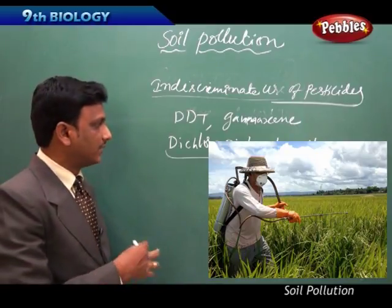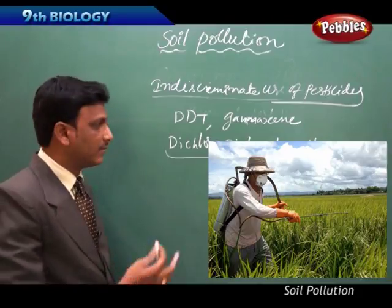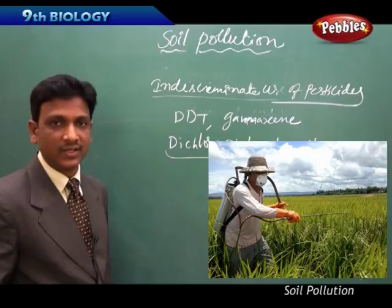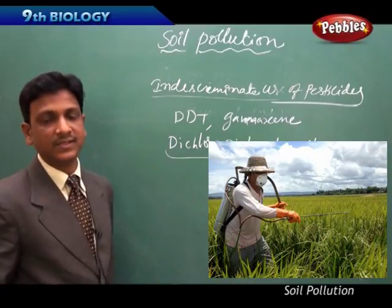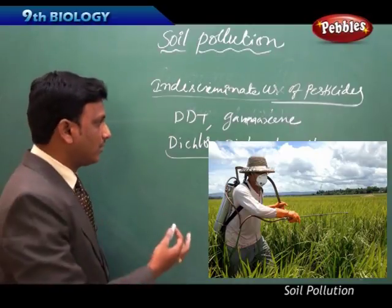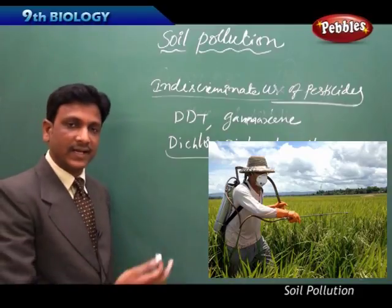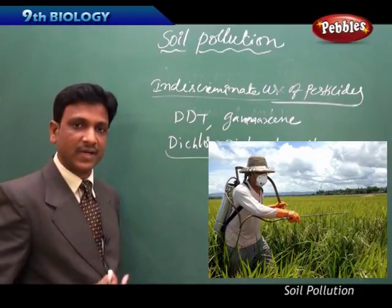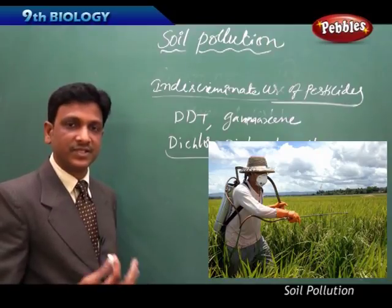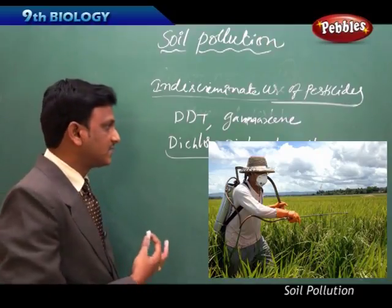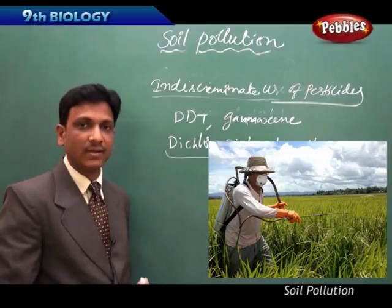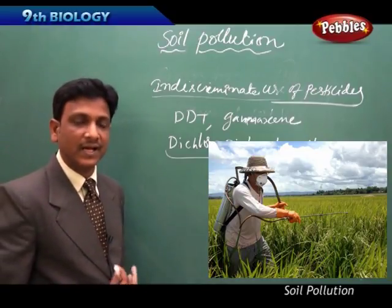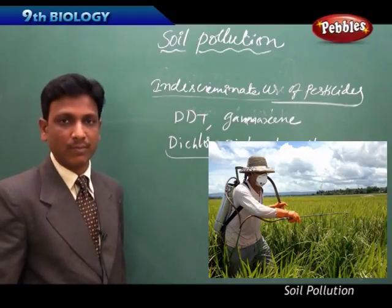Soon they become resistant and are not killed by these chemicals. These chemicals are very soluble in water, so they are absorbed by the soil. Not only absorbed by the soil, they enter into the water system, they enter into the bodies of other organisms - primary consumers, secondary consumers and tertiary consumers. These chemicals get deposited in the bodies of different organisms, do not degrade, and lead to severe health problems.